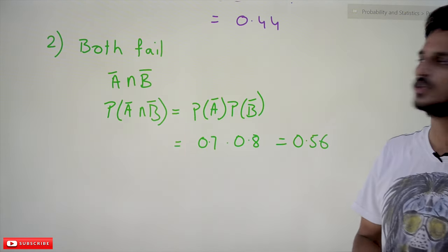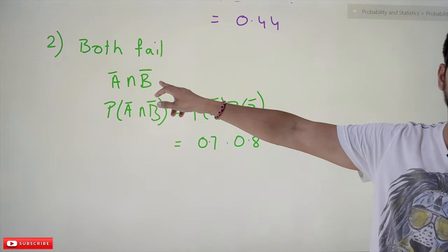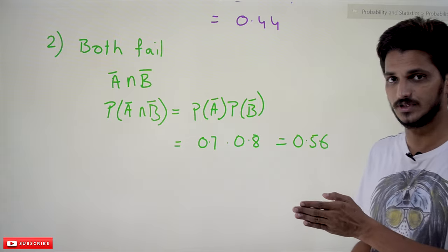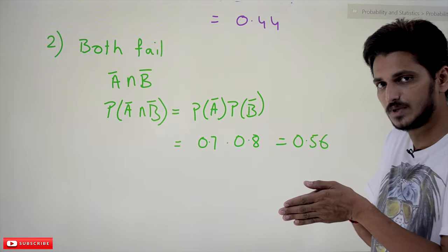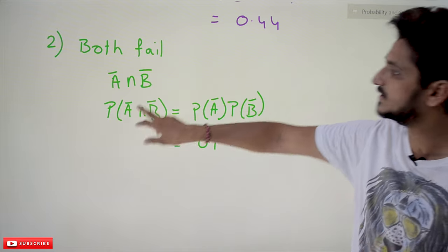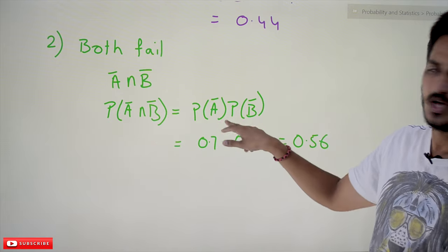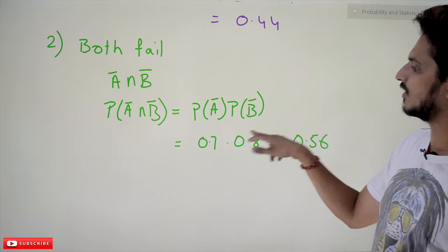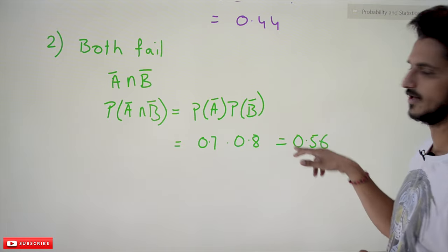For the second part — both fail to hit — that is A' ∩ B'. Both are independent events, so P(A' ∩ B') = P(A') × P(B') = 0.7 × 0.8 = 0.56.